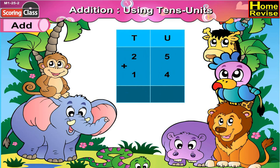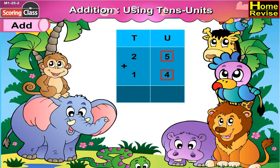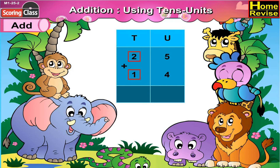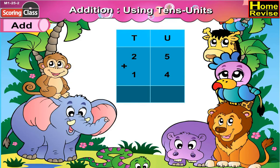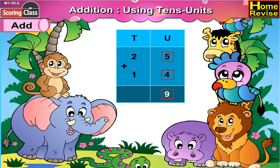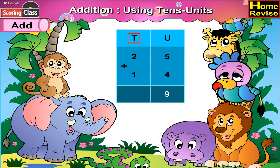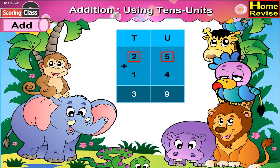Now the next sum. Under units we have 5 plus 4, under 10s we have 2 plus 1. Let's begin our addition with the units column. 5 plus 4 would be 9, and under 10s column 2 plus 1 would be 3. So 25 plus 14 is 39.